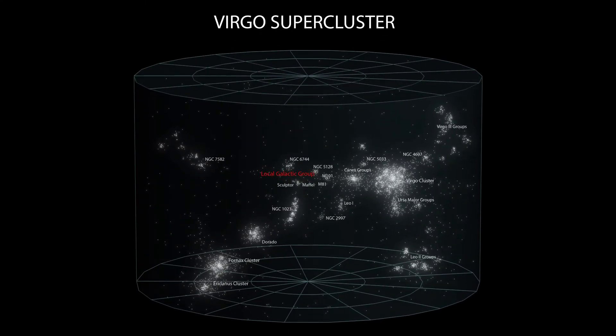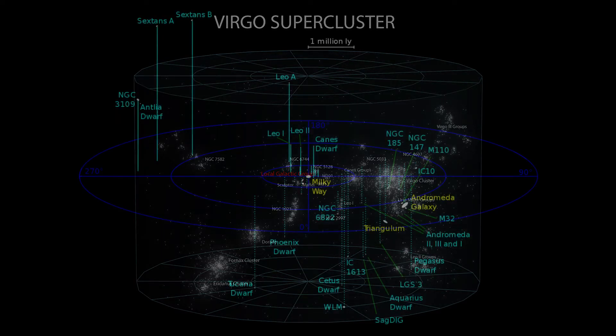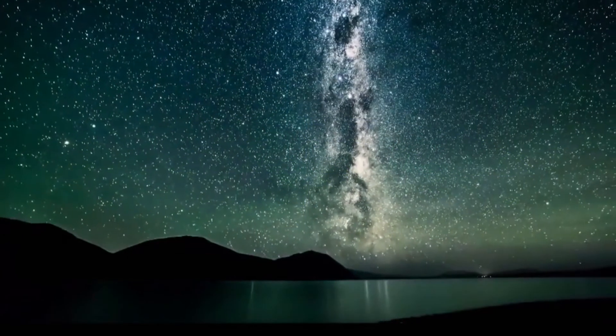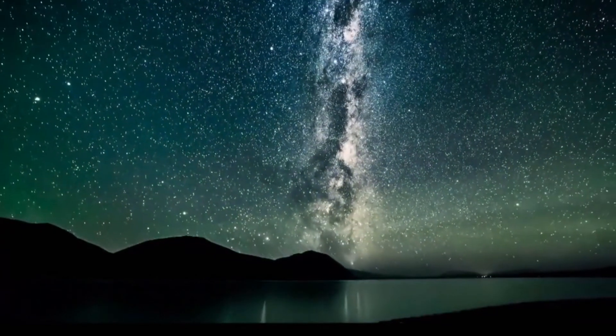The Virgo cluster lies at the heart of the larger and more massive Virgo supercluster, which also contains the local group—the group of galaxies that includes our own Milky Way as an outlying member.